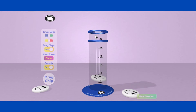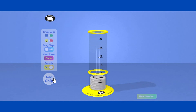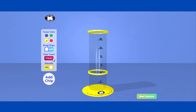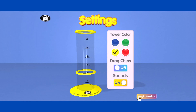Then release the chip to drop it. Students practice their skills and add chips to the Token Tower for a job well done. Each chip brings students closer to their goal. Click Clear to empty the tower. At any time, click New Session to set a new goal and start a new session.